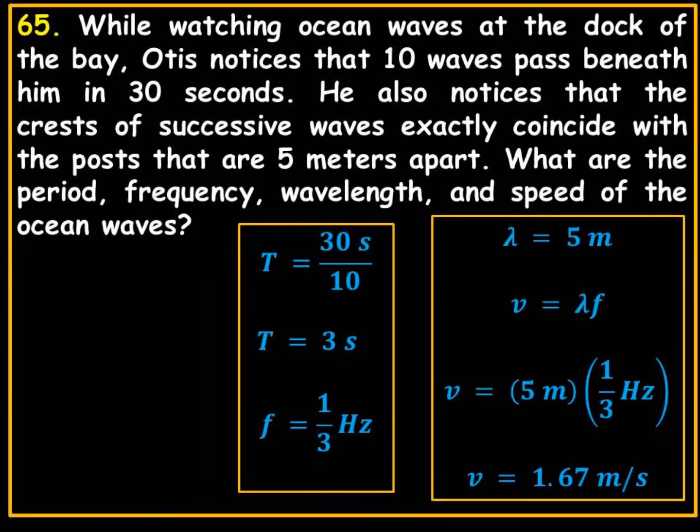The next part of the problem. The wavelength is pretty simple because the posts are five meters apart. So that's going to be the wavelength. We know the frequency. The frequency is one-third hertz. So it'll be five times one-third hertz. You really don't have to understand anything about dimensional analysis to understand that. The SI units for frequency is hertz. The SI units for length is meters. And the SI units for velocity would be therefore meters per second. And that's the answer. 1.67 meters per second.